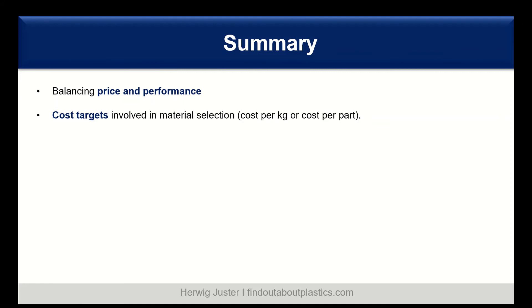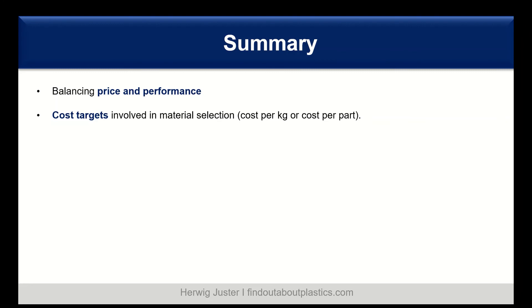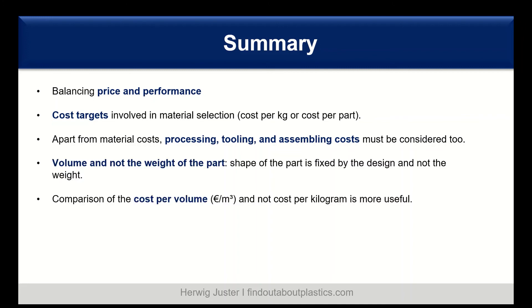A quick summary. It's important to balance price and performance in your material selection process. Also be clear about the cost targets involved in the material selection: is it cost per kilo or cost per part? And apart from material costs, we should keep in mind we also have processing, tooling, and assembling costs which must be considered. Then the important differentiation between volume and weight of the part.